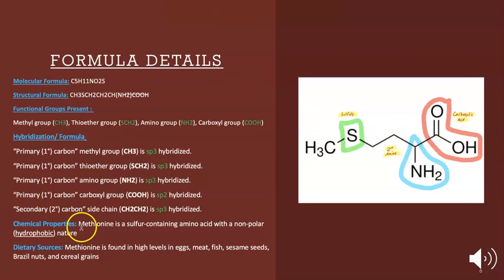For chemical properties: methionine is a sulfur-containing amino acid with a non-polar hydrophobic nature. The dietary sources on how to acquire this amino acid can be found in meat, eggs, fish, sesame seeds, brazil nuts, and cereal grains.